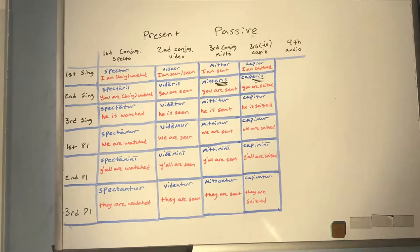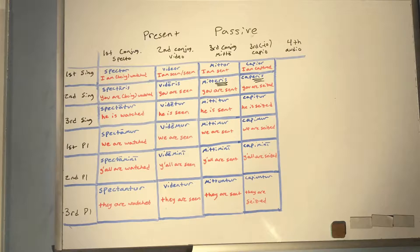Third-IO conjugation with CAPIO: CAPIOR (I am captured), CAPERIS (you are seized — irregular -ERIS), CAPITUR (he is seized), CAPIMUR (we are seized), CAPIMINI (y'all are seized), CAPIUNTUR (they are seized). Note there is an I before -NTUR because third-IO always signals itself by inserting an I in every form.